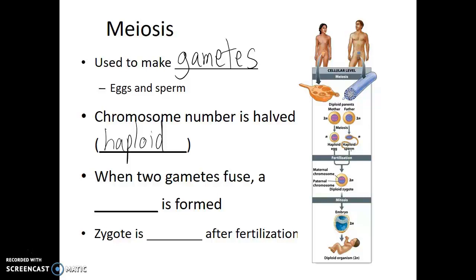When two gametes fuse together, the resulting cell — the fertilized egg — is known as a zygote. The zygote is the cell that will become the offspring through cell division and embryonic development. That one fertilized egg will become the offspring, or the next generation. And just like all the other cells in our body, a zygote is diploid after fertilization. In fact, it's the zygote that gives rise to all the other cells in our body.